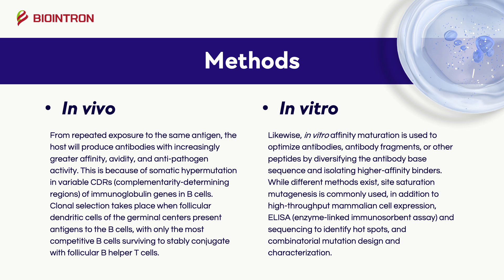Likewise, in vitro affinity maturation is used to optimize antibodies, antibody fragments, or other peptides by diversifying the antibody base sequence and isolating higher affinity binders. While different methods exist, site saturation mutagenesis is commonly used in addition to high-throughput mammalian cell expression, ELISA, and sequencing to identify hotspots and combinatorial mutation design and characterization.